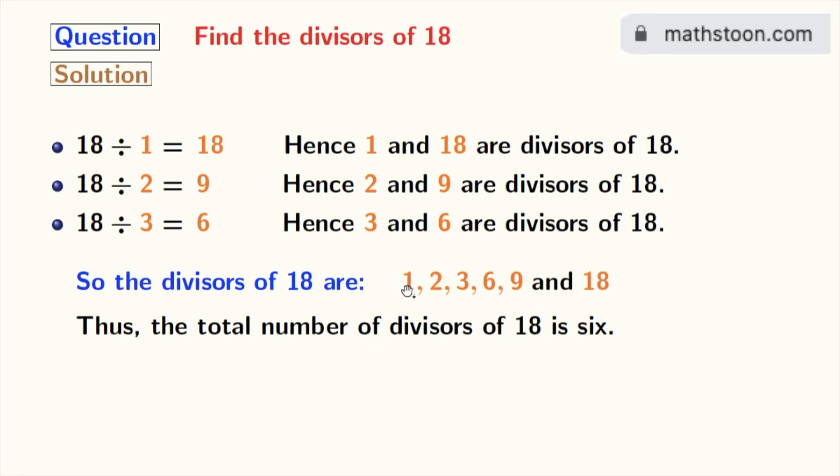Now if we look at the divisors of 18, we can see that 2 and 3 among these numbers are prime numbers because these two numbers do not have any divisor other than 1 and that number itself.